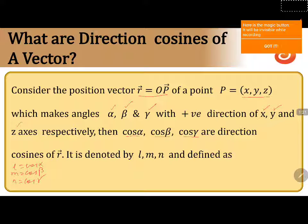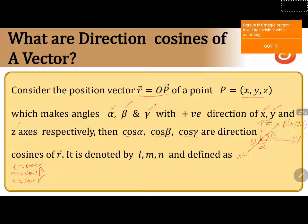Now we will discuss this with the help of a diagram. We take O as the origin. This represents the y axis, this represents the z axis, and this represents the x axis. In the x, y, and z axes we will take the angles. The angle made by point P with respect to the x axis is alpha. We consider point P with coordinates x, y, and z. Joining O to P, the vector OP makes an angle beta with the y axis and an angle gamma with the z axis.